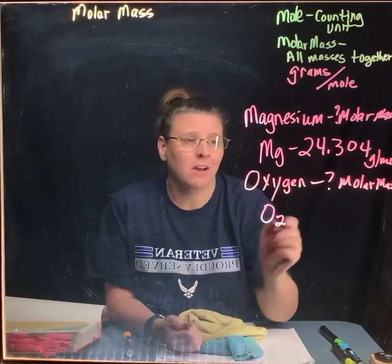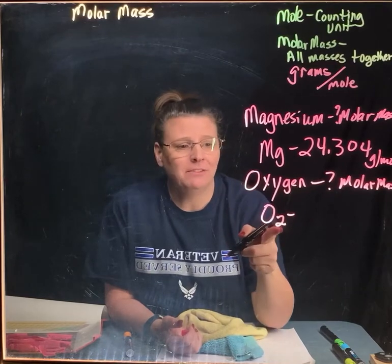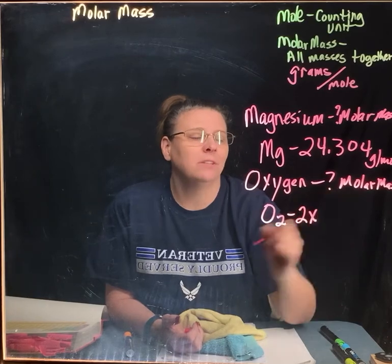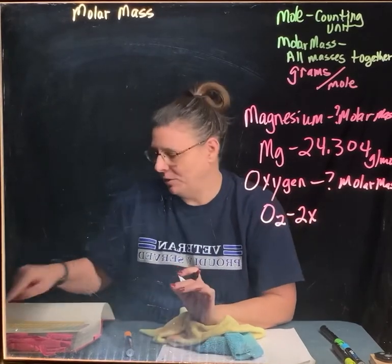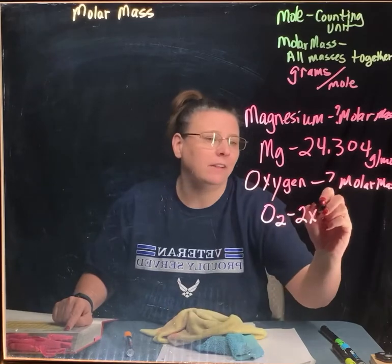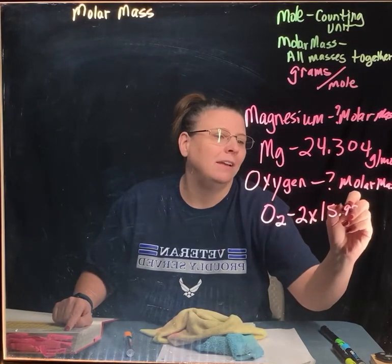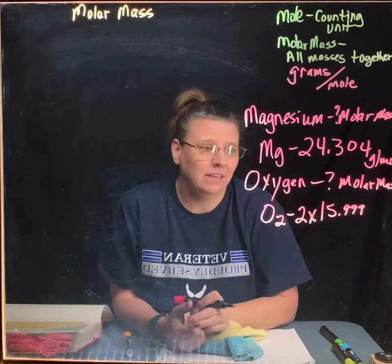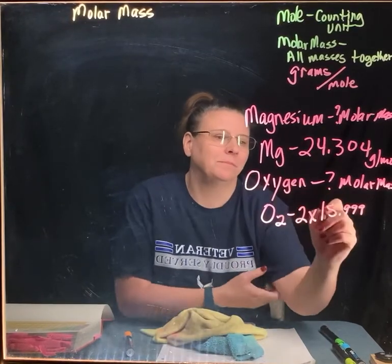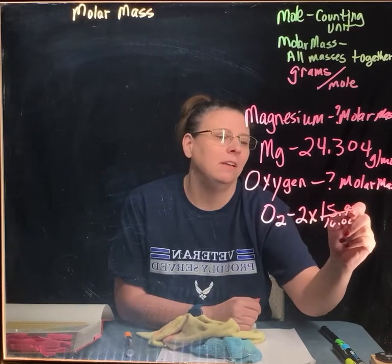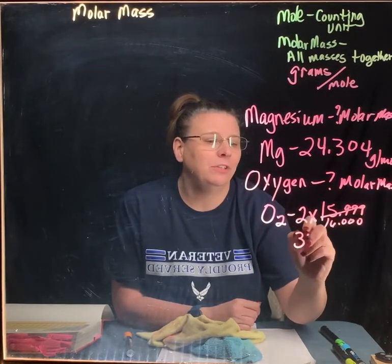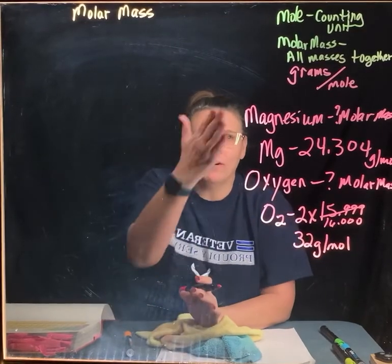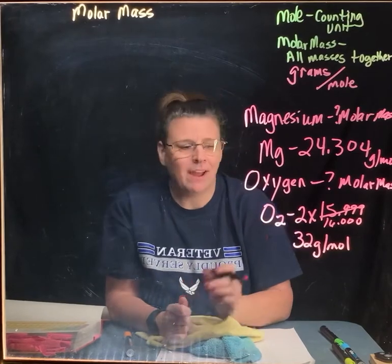So to find the molar mass of oxygen, you still have to go to the periodic table, but you have to take into account this two, like counting atoms. So you do 2 times, and then you have to find your molar mass, and you go to the periodic table, and you find out it's 15.999. You can round oxygen to 16, and then you know that your molar mass, we're going to go ahead and round this to 16, and our molar mass would be 32 grams per mole.